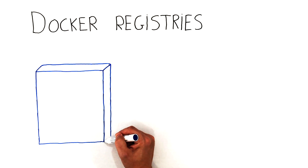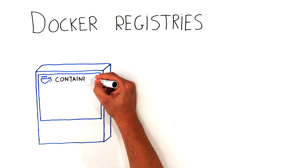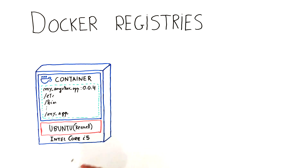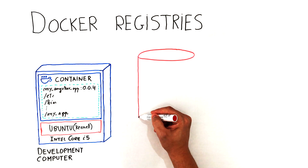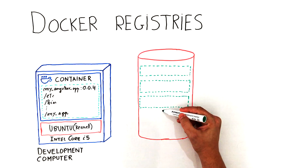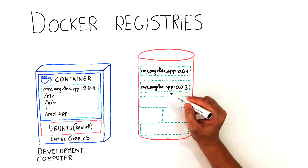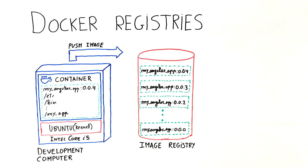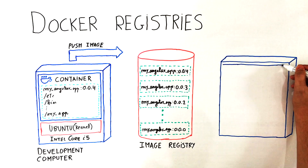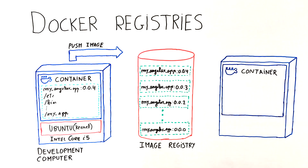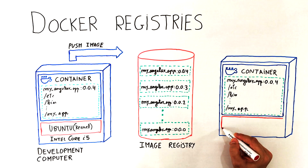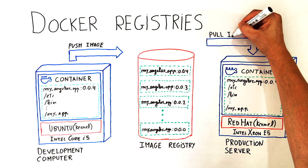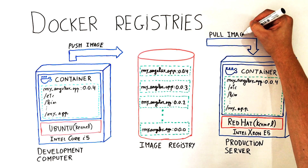A Docker registry is a repository that stores your Docker images and facilitates easy sharing of those images between different people and computers. When you build your image, you can either run it on the computer you built it on, or you can upload the image to a registry and then download it on another computer and run it there. Certain registries are public, while others are private, accessible only to certain people or computers. To allow distributing and running the image on another computer, like a production server, you need to push the image to an external image registry. Once the image is available to download from an image registry, you can pull it from anywhere.